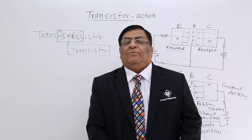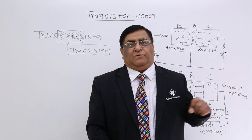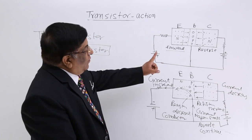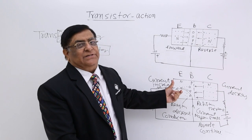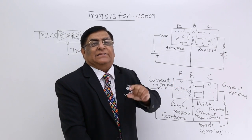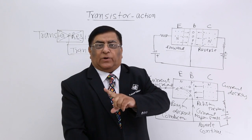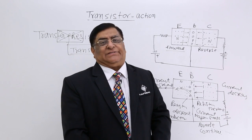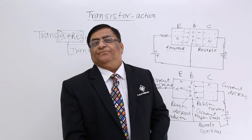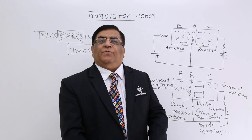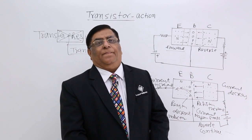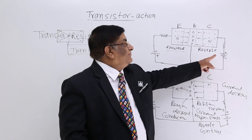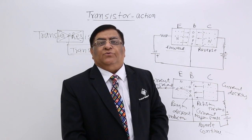We will study this transistor action in the reference of common emitter transistor, because that is how it is used for making amplifiers. We will study the action in terms of changes in voltage and changes in current — what we call the characteristic graph, like we made in diodes. Here there are two circuits and two sources of voltage, so we have to make two graphs.